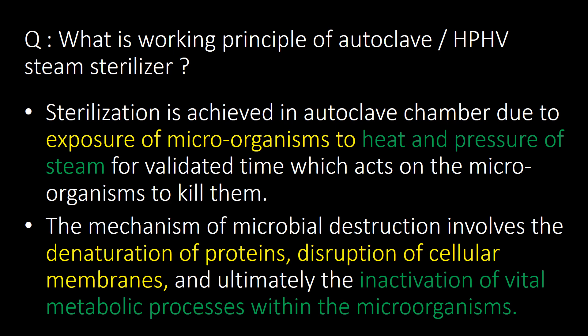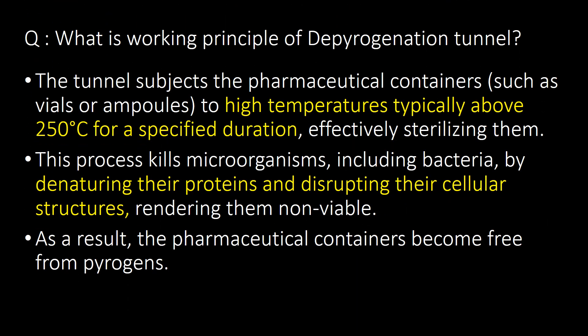What is the working principle of an autoclave or HPHV steam sterilizer? Sterilization is achieved in the autoclave chamber due to exposure of microorganisms to heat and pressure of steam for a validated time, which acts to kill them. The mechanism of microbial destruction involves denaturation of proteins, disruption of cellular membranes, and ultimately the inactivation of vital metabolic processes within the microorganisms.